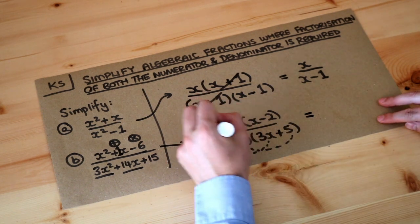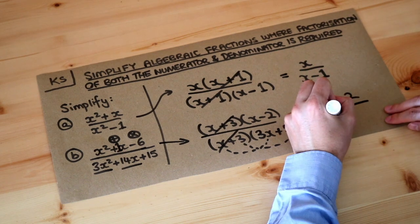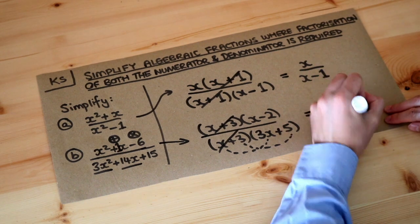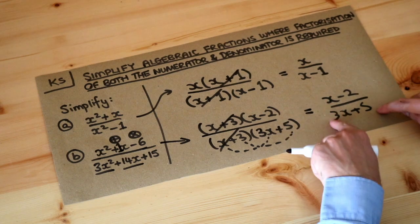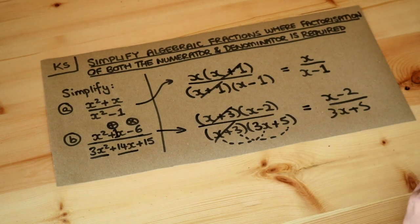And then we see what's common top and bottom: x plus three. Cross those out to get x minus two over three x plus five. And note by the way that we no longer need the brackets around these things because there's nothing around these brackets, so we can just get rid of the brackets.